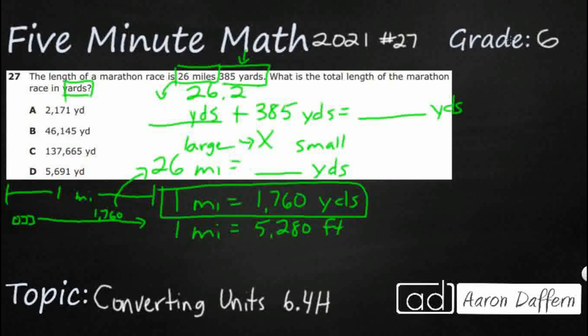So let's take our 1760 yards and our 26 miles, and let's just do basic multiplication. So 6 times 0 is 0, 6 times 6 is 36, 6 times 7 is 42 and that 3 back in is 45, 6 times 1 is 6 and the 4 back in is 10. So I've got 10,560.